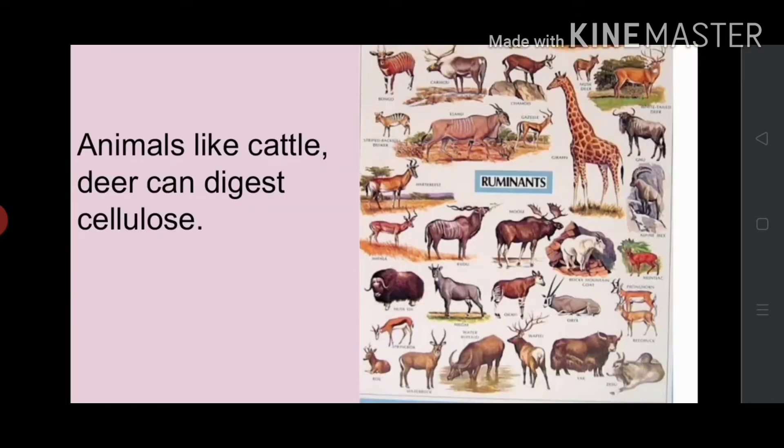Actually, the grass is rich in cellulose. What is cellulose? It is a type of carbohydrate. Animals like cattle and deer can digest cellulose, but human beings cannot digest cellulose. Do you know why?